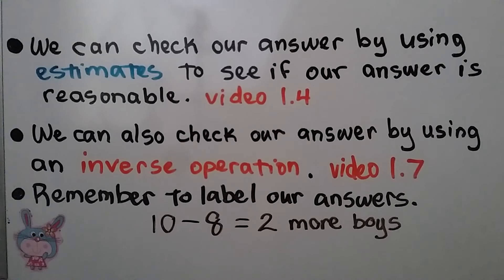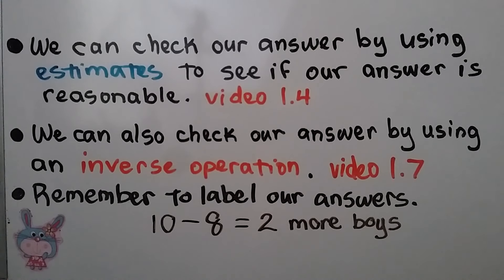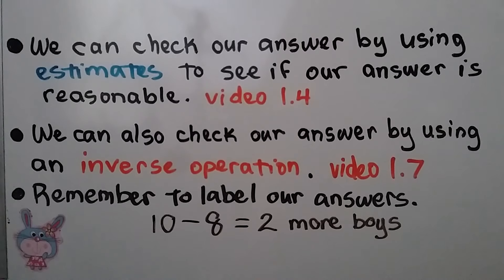We can check our answer by using estimates to see if our answer is reasonable — we learned about that in video 1.4, linked in the description. We can also check our answer by using an inverse operation, which we learned about in lesson 1.7, also linked in the description. Remember to label our answers. Ten minus eight is equal to two more boys — we would label it 'boys.'